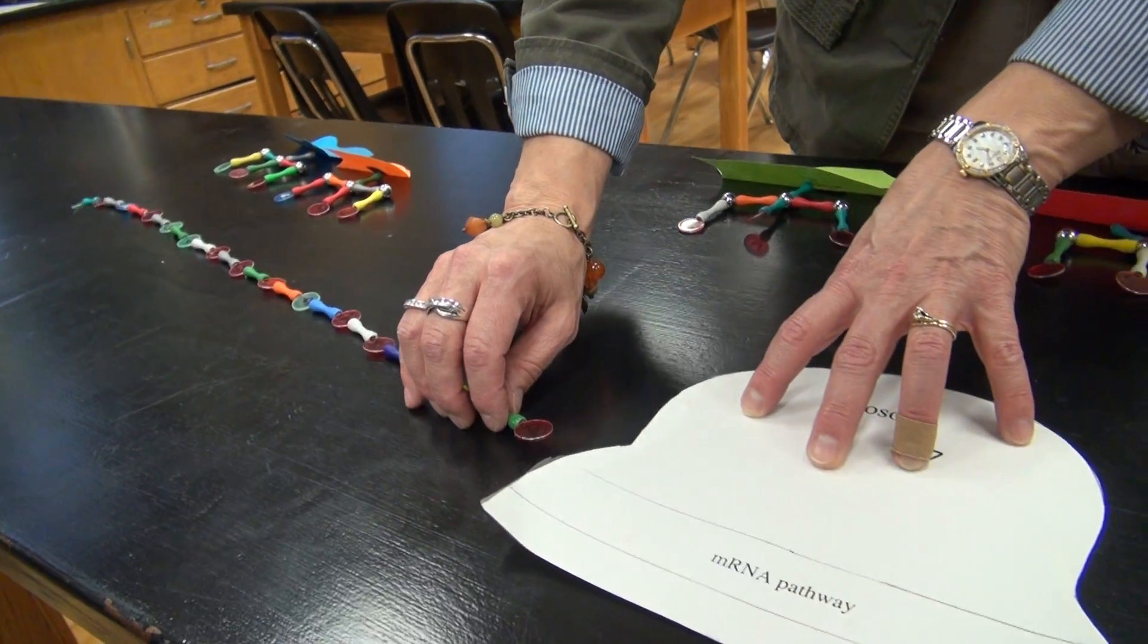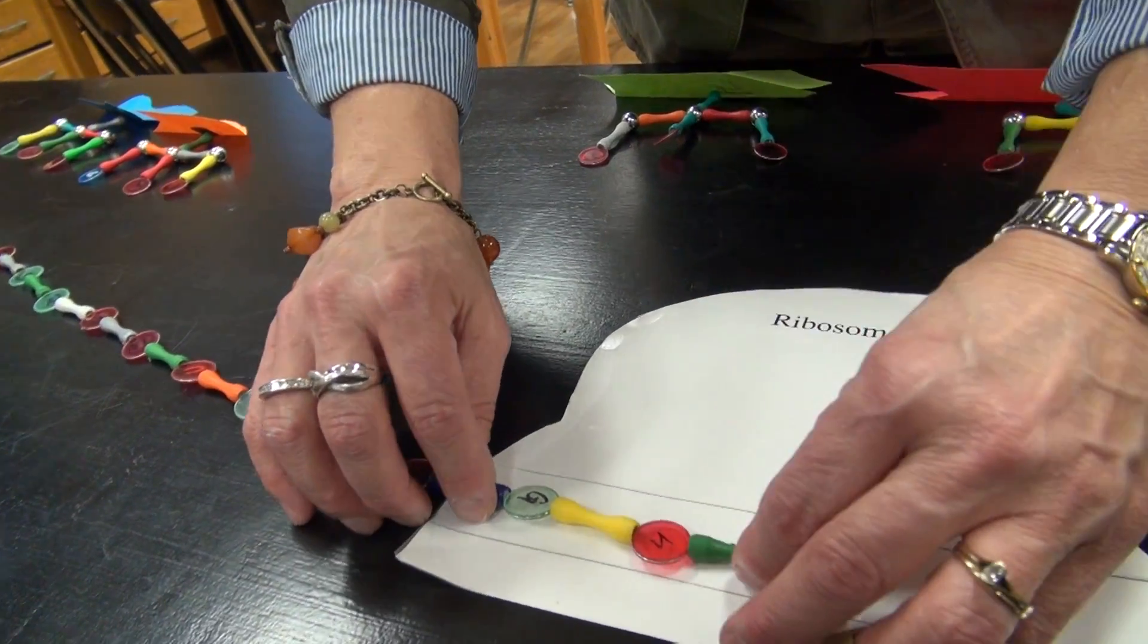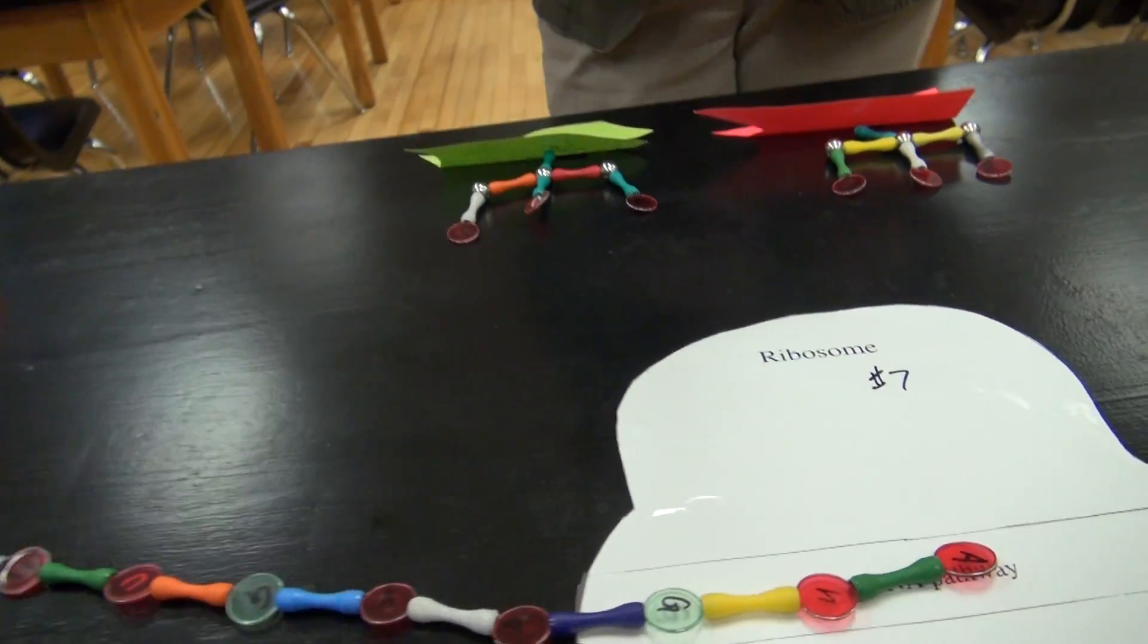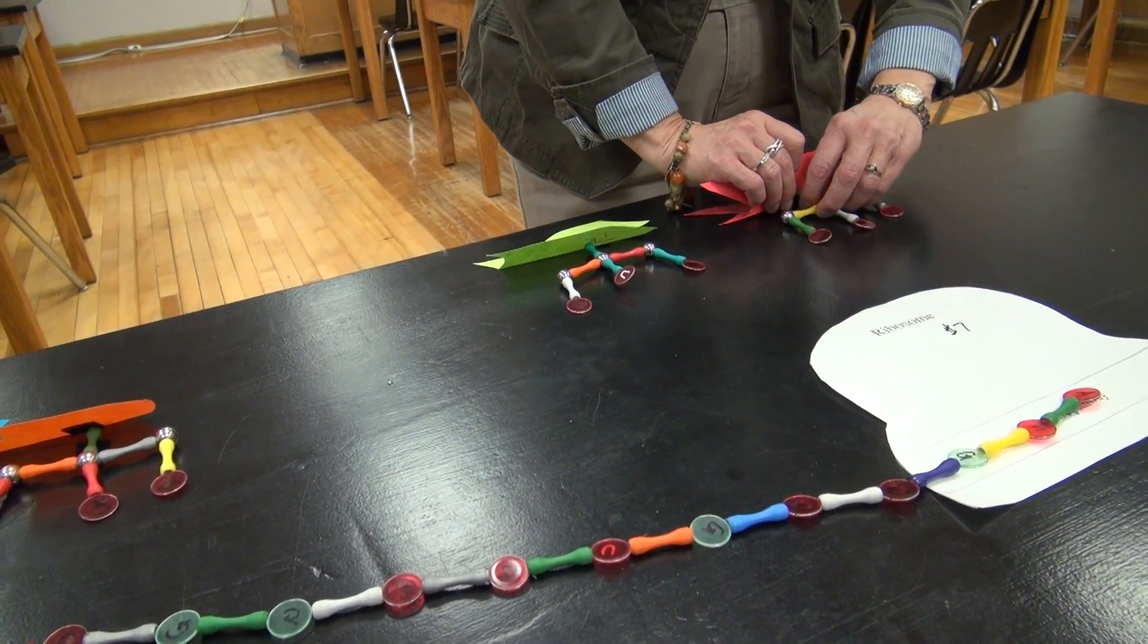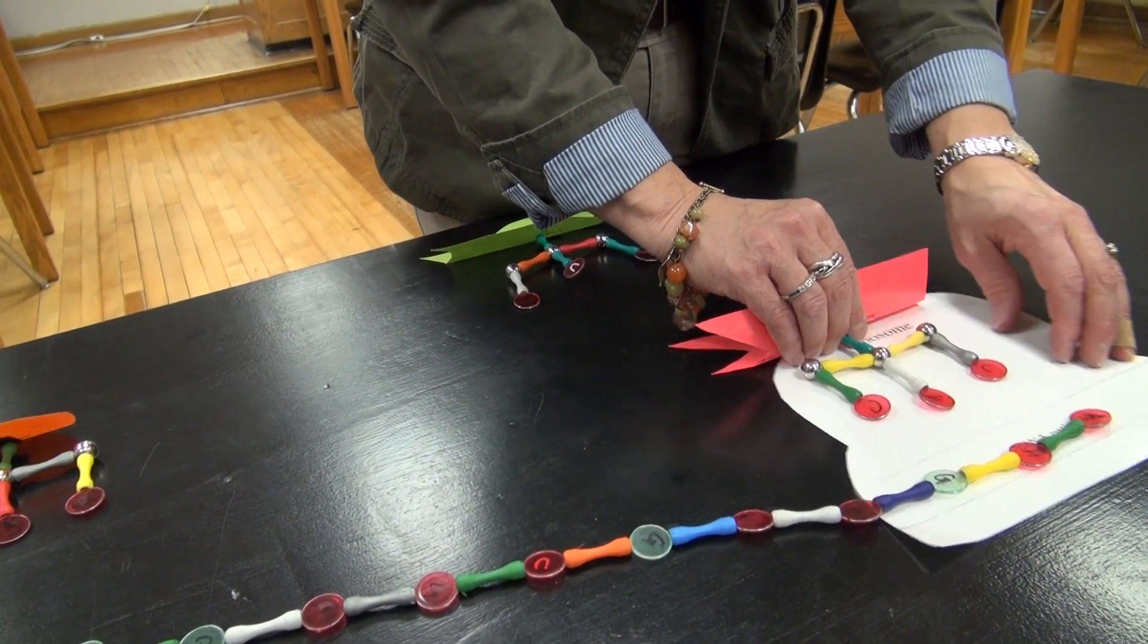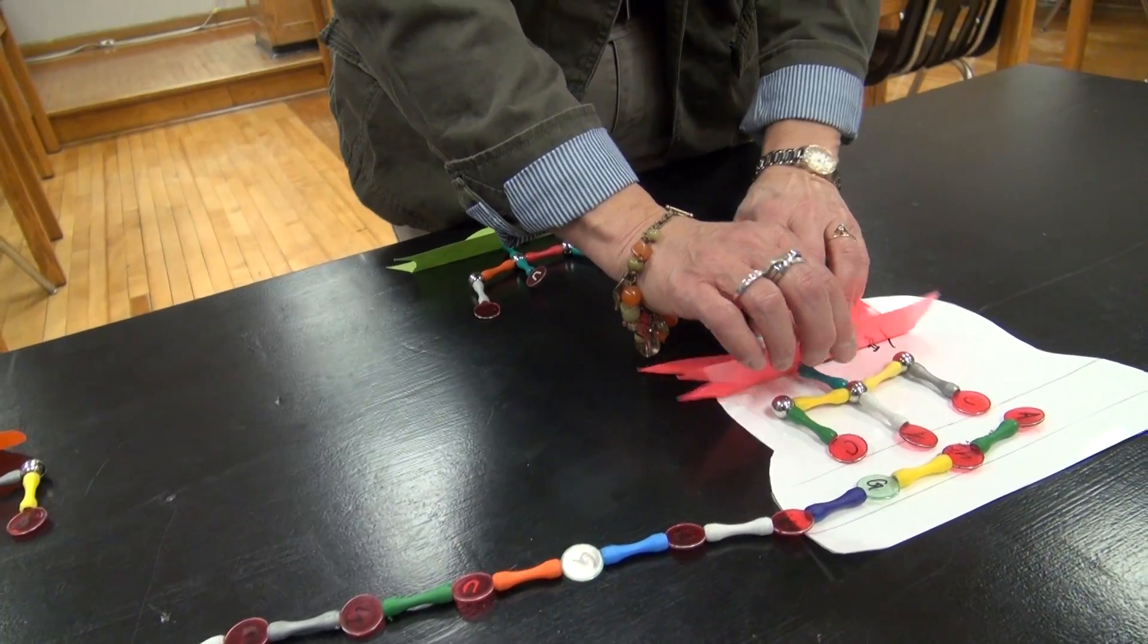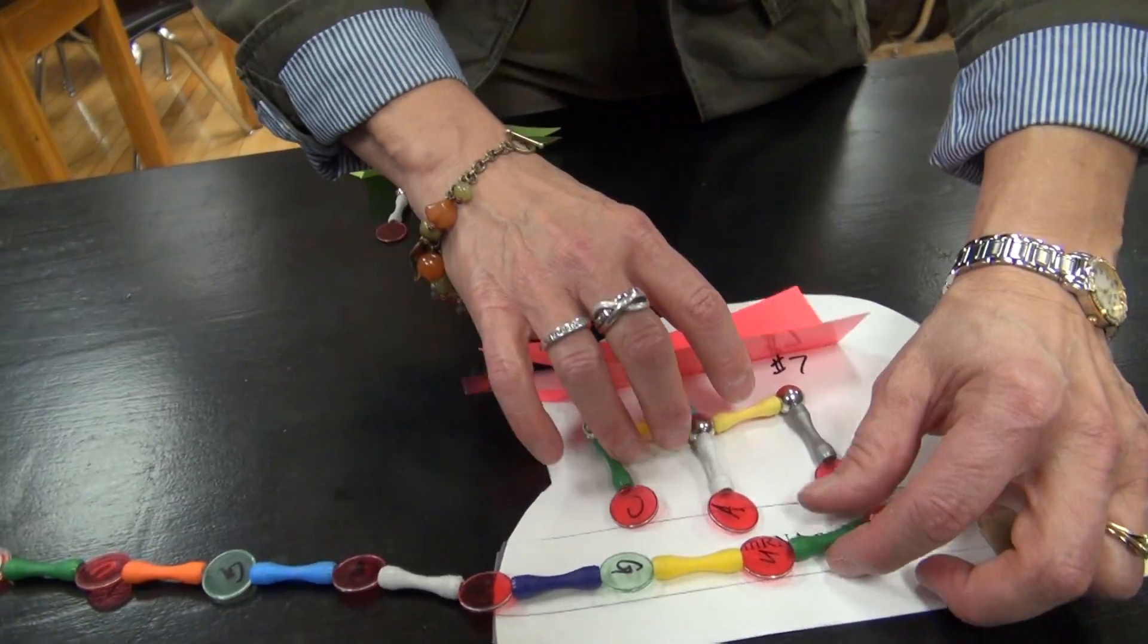This process is translation. It goes to the ribosomal RNA, and it reads a codon, which is three mRNA bases. That causes a tRNA that's complementary to bring its protein, which is this paper, to the ribosomal RNA.